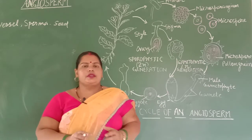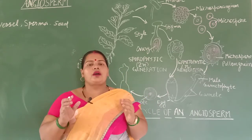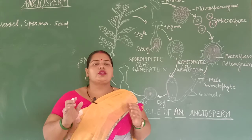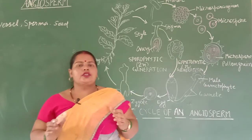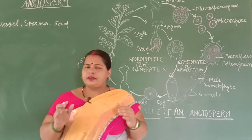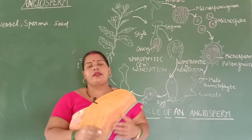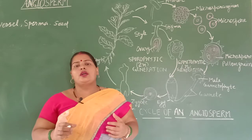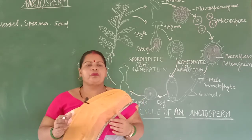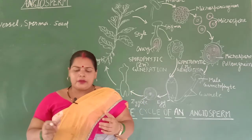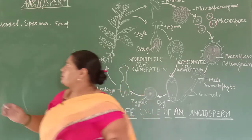So students, today we are going to learn about the largest group of the plant kingdom. The angiosperm is the largest group of the plant kingdom because it has a large number of species — about 30 lakh species in this phylum. Today we are going to learn about the general characters of the angiosperm.